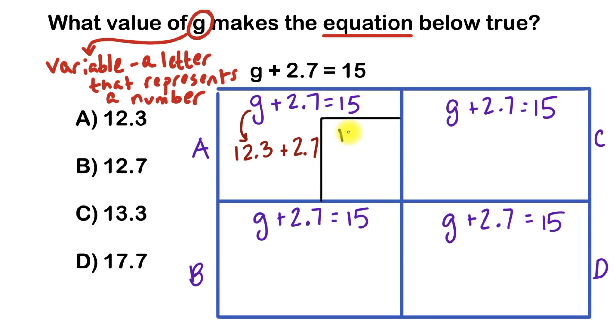So I'll put 12.3, and then I'll add under 2.7, making sure that the decimal points are lined up. I'll put my 7 right next to the decimal under the 3, and then the 2 to the left of the decimal under this 2.